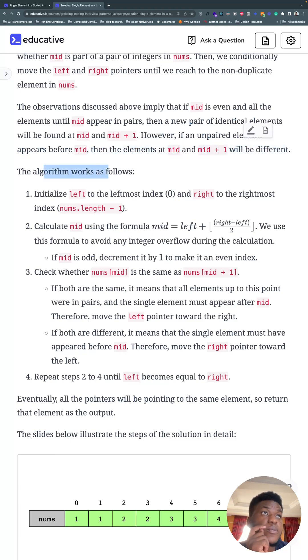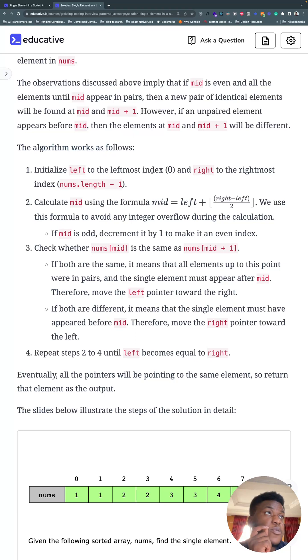So the algorithm works like this: initialize left to the leftmost index zero and right to the rightmost index. Calculate mid using the usual formula: left plus (right minus left) divided by two, floored. If mid is odd, decrement by one to make it even. Check whether what's at mid is the same as what's right after mid. If they're the same, it means all elements up until this point are in pairs and the single element must appear after mid, so move the left pointer toward the right.